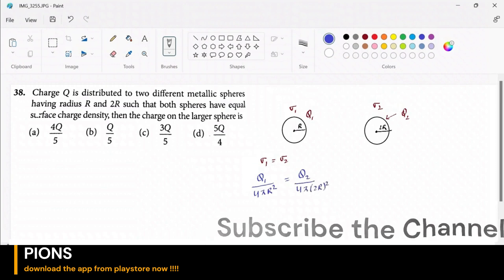Now they are saying the charge Q is distributed to both, so q1 plus q2 is capital Q. So this is equation 2 and that is equation 1. Let's solve them and figure out q1 and q2 both. Okay, but they are asking q2 only, so our options are for q2, but we will find it for both.